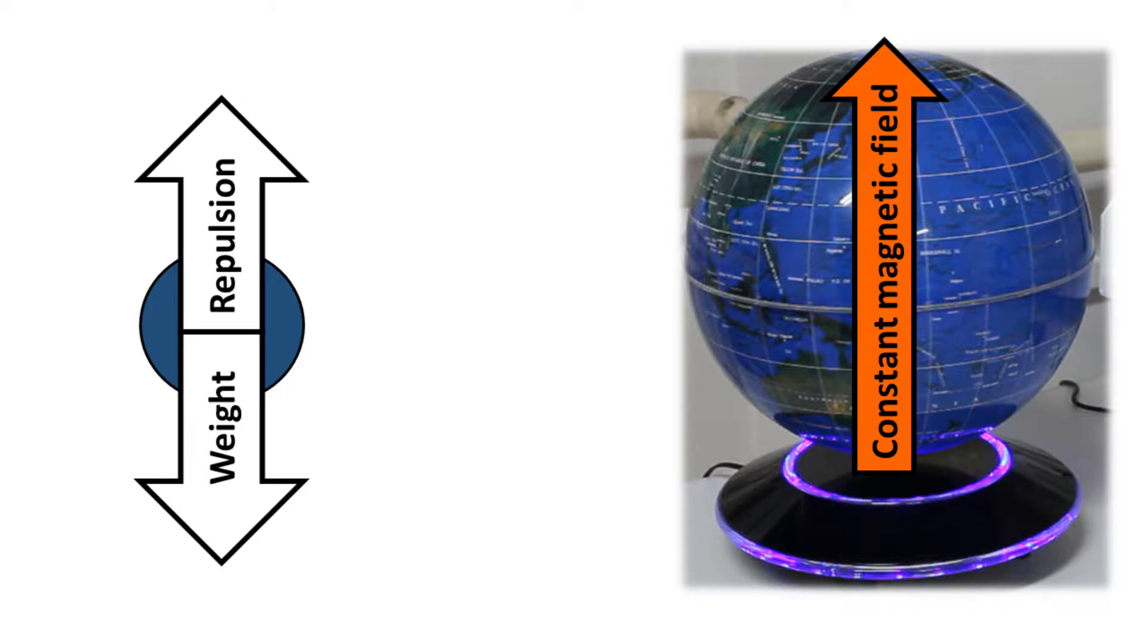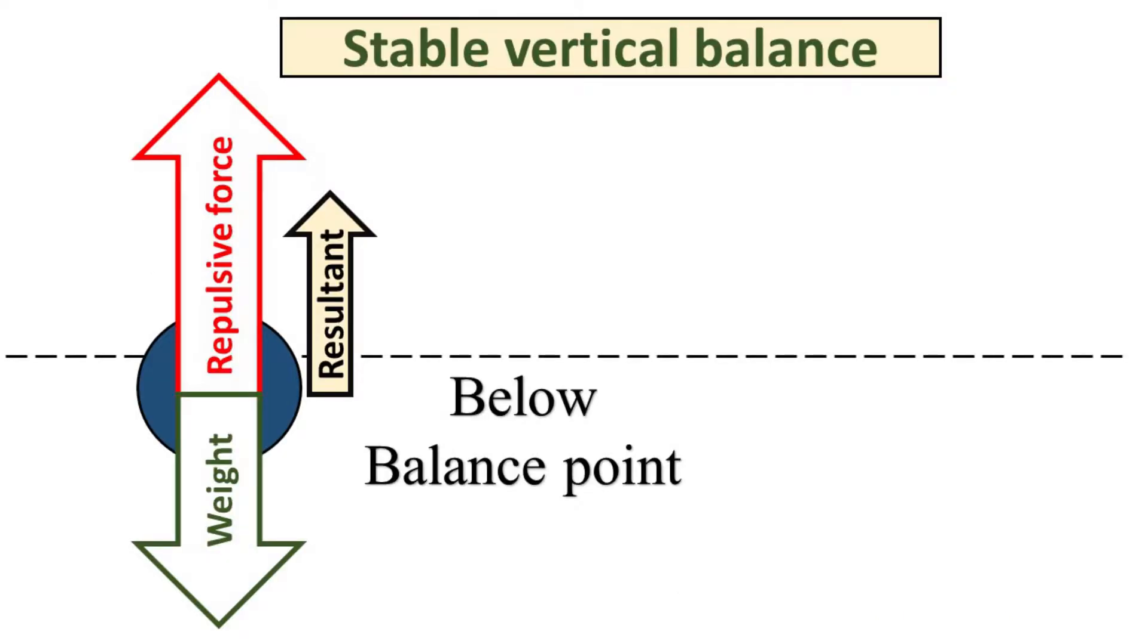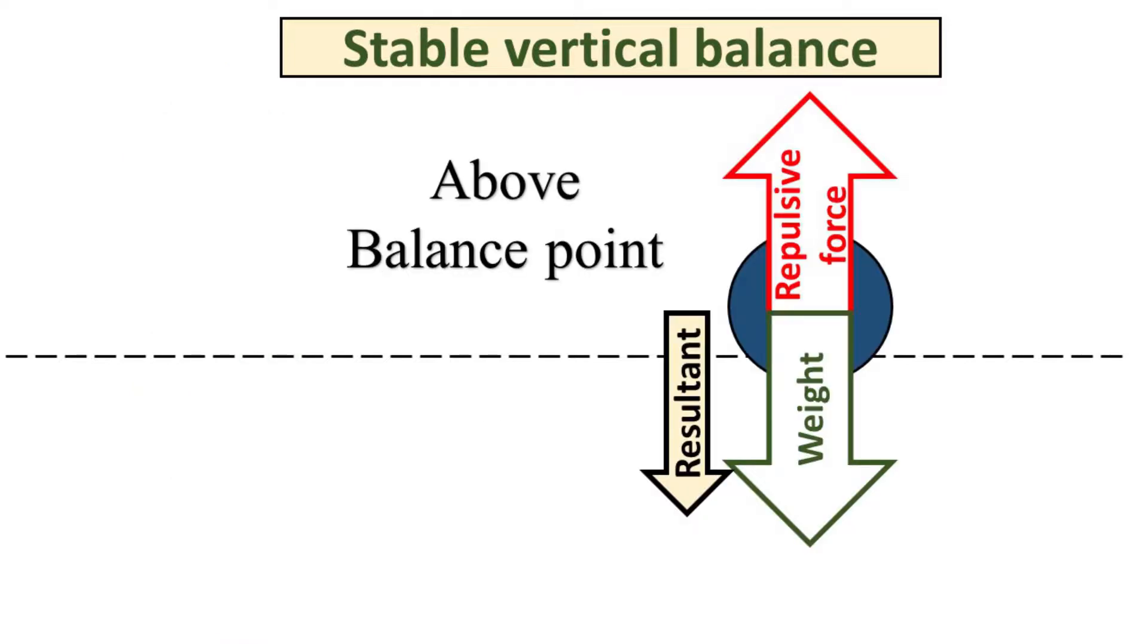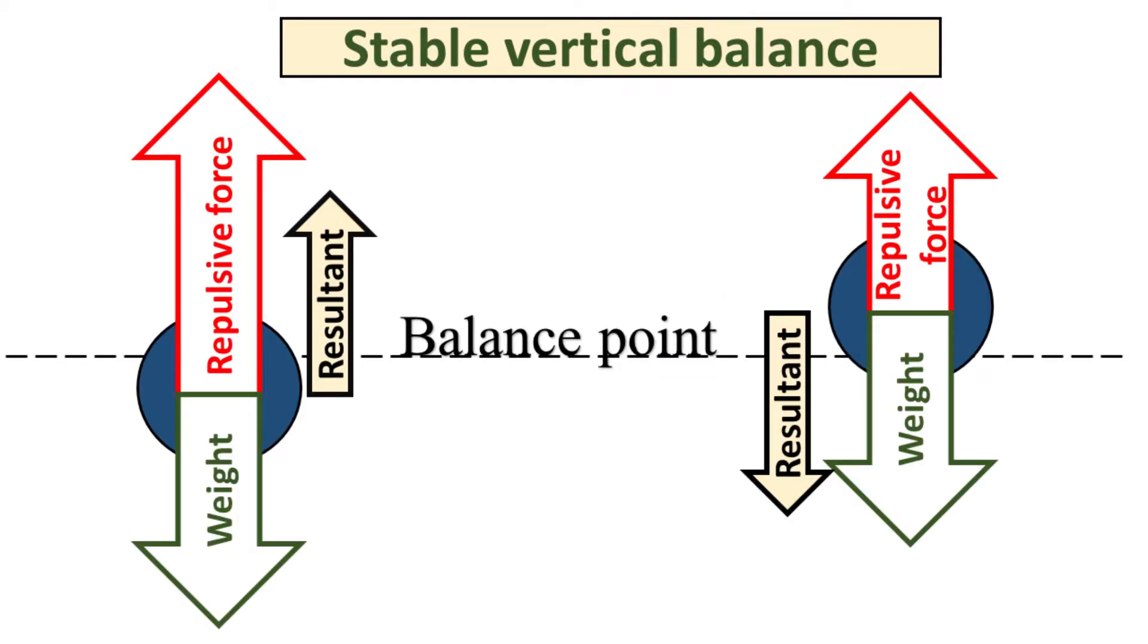A constant magnetic field directed upwards is already capable of stabilizing the vertical position. When the globe is below balanced position, repulsive forces are stronger than weight, pushing it upwards. If the globe is above balanced position, repulsive forces are smaller than weight, pulling it back downwards. Therefore, vertical position is intrinsically stable.